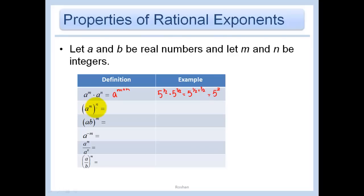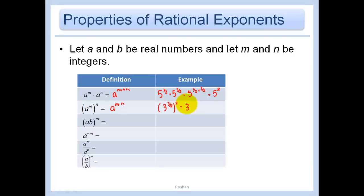a to the m to the n power — power to a power becomes more powerful and you multiply those exponents: a to the m times n. 3 to the 3 halves — let's square that. We get 3 to the 3 over 2 times 2, and so that is just 3 to the 3rd power. And we can leave it like that.